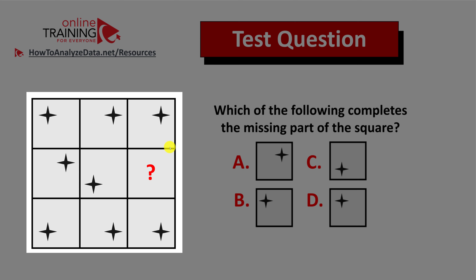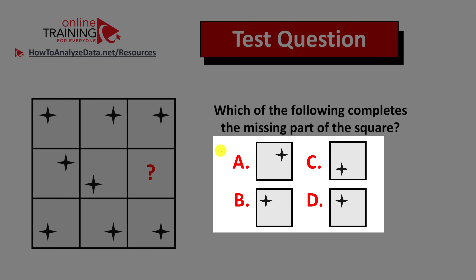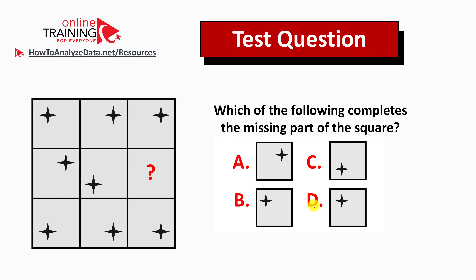One small square is missing, and you have four different choices to figure out the final answer — choices A, B, C, and D. Each choice has a star in a different corner. Do you think you know the answer? Give yourself 10 to 20 seconds to see if you can come up with the answer on your own.